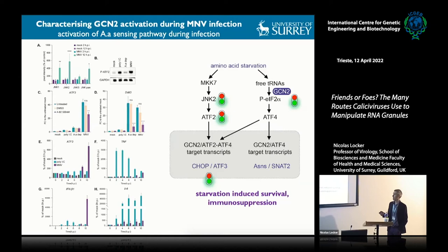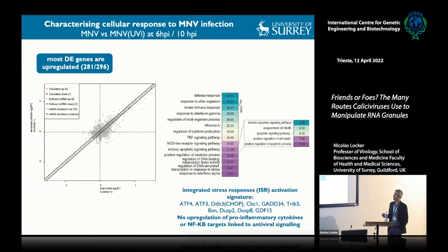What we really see here is that MNV infection is associated with a starvation-type response. This correlates with immunosuppression, with detection of TNF-alpha early in infection and immunosuppressive cytokines later in infection. Using RNA sequencing of infected cells, we identified the typical signature associated with amino acid stress and the integrated stress response—in particular activation of ATF4, CHOP, CHOP1, GADD34, and GDF15—but no upregulation of pro-inflammatory cytokines usually linked to antiviral signaling.